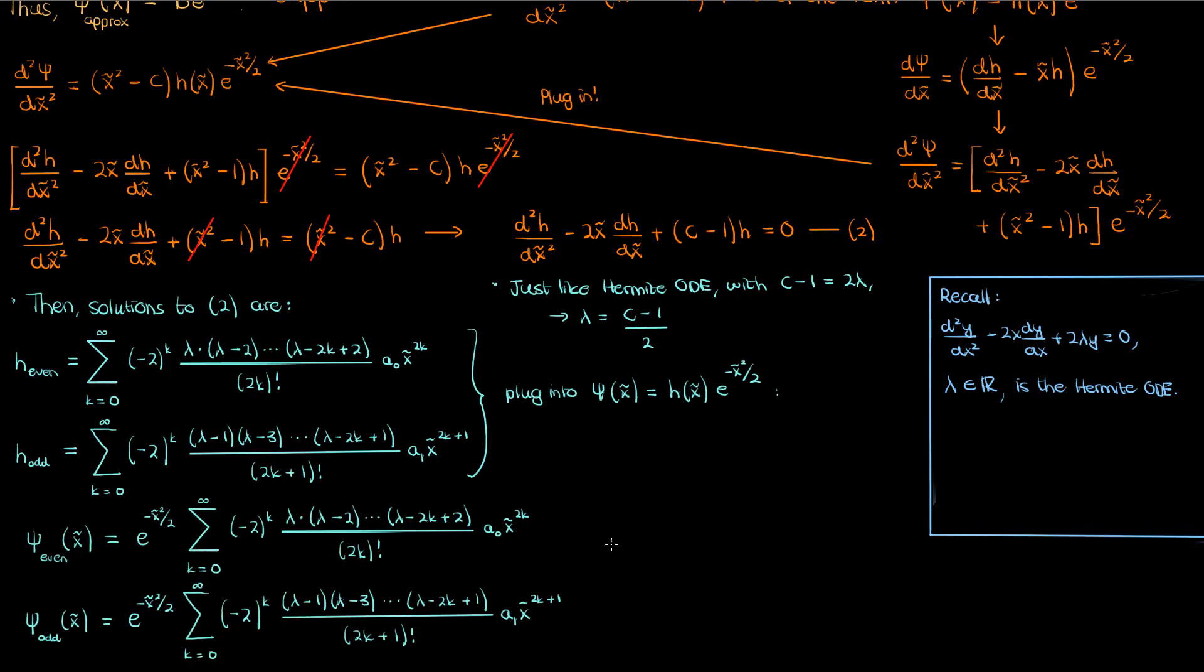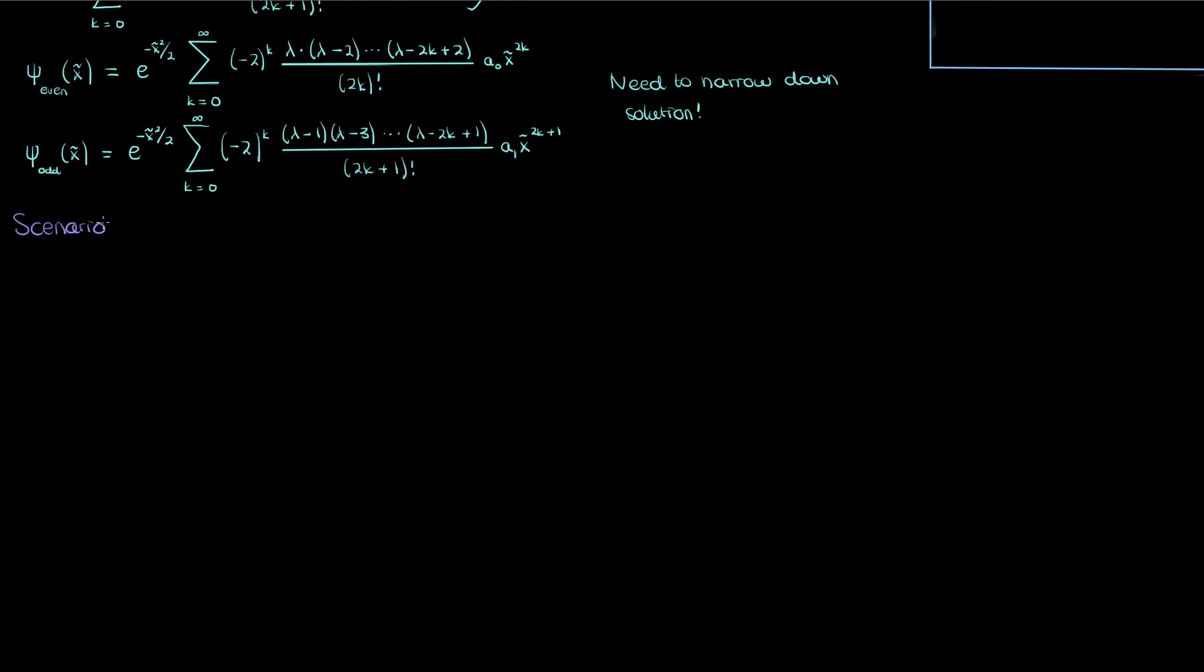Now we can't pack our bags just yet and say that we found the solution to the harmonic oscillator Schrödinger equation. We still have to apply some physics to the solution and narrow it down a little more. And to apply this physics we'll consider two scenarios involving λ.